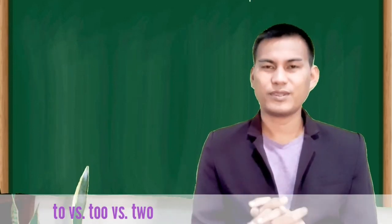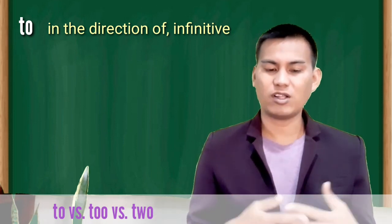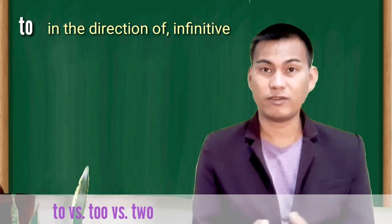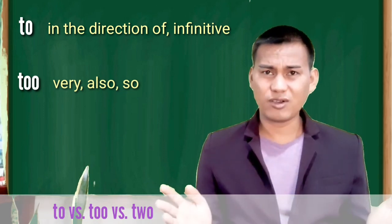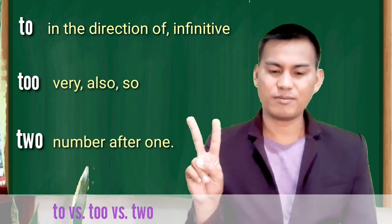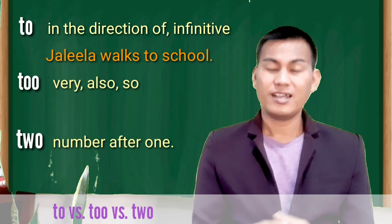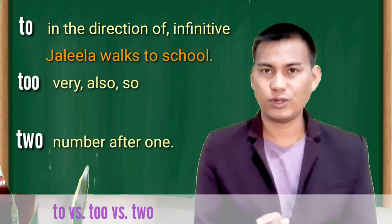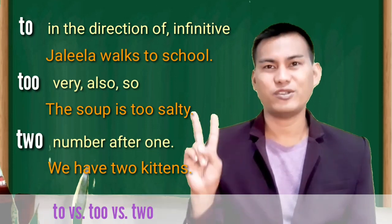To, too, two. To means in the direction of. It is also part of the infinitive form of a verb. Too means very or also or so. Two means more than one. The number that comes after one. Jalila walks to school. The soup is too salty. We have two kittens.